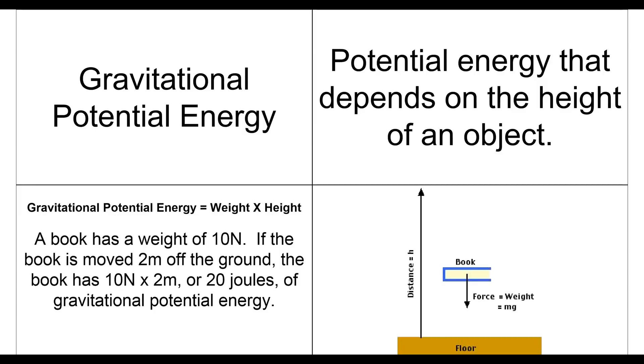Potential energy that depends on the height of the object. So, basically, as we lift an object up off of the ground or whatever surface it could fall to, it increases in potential energy. So, we use an equation, gravitational potential energy equals the weight times the height.